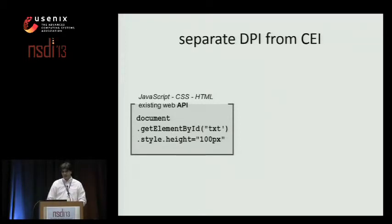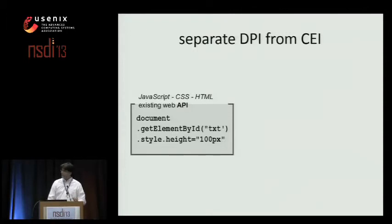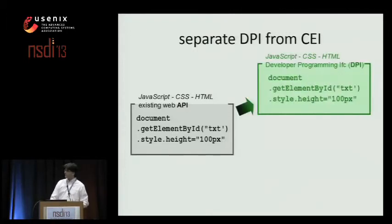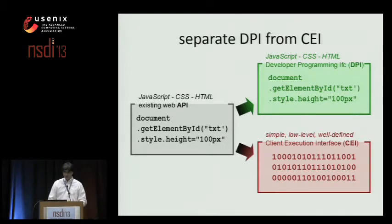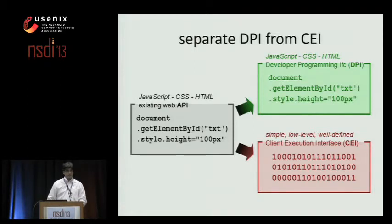Clearly these goals are at odds. This talk is about refactoring that API — separating the roles of client execution interface and developer programming interface. In the existing API, JavaScript serves as both the programming language and the execution model. In the refactored world, developers can still program in JavaScript as their DPI, but by the time the application arrives at the client, all the client sees is a much lower-level, simpler, and more enforceable model — the CEI. So while the CEI is minimal, we keep that fancy developer programming interface that developers love, and in fact can make it even better.